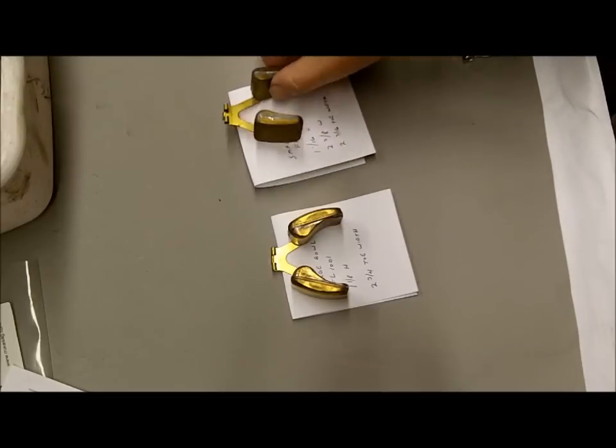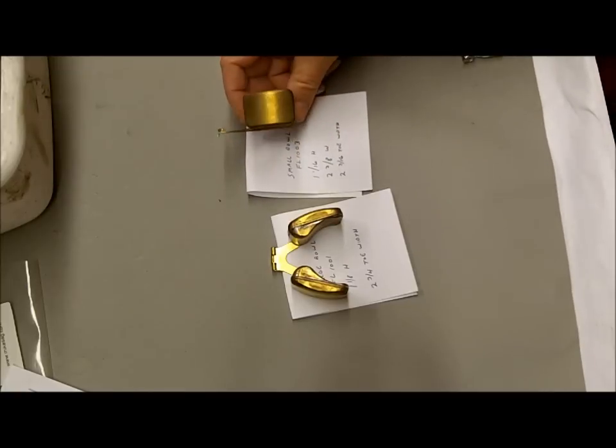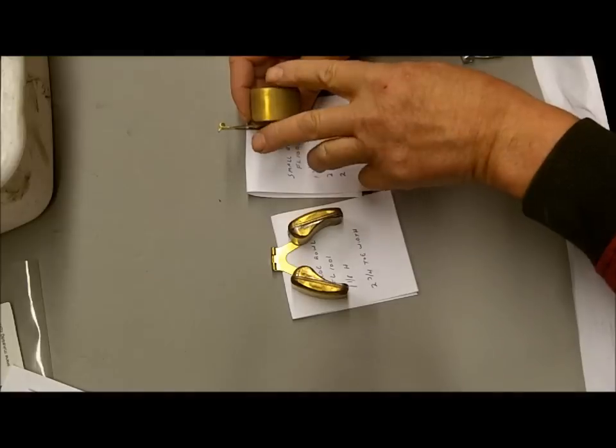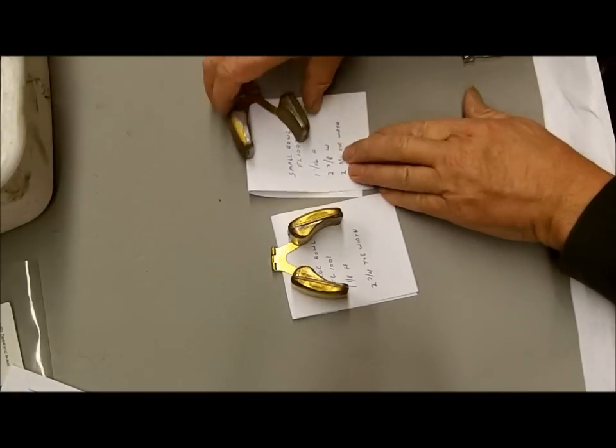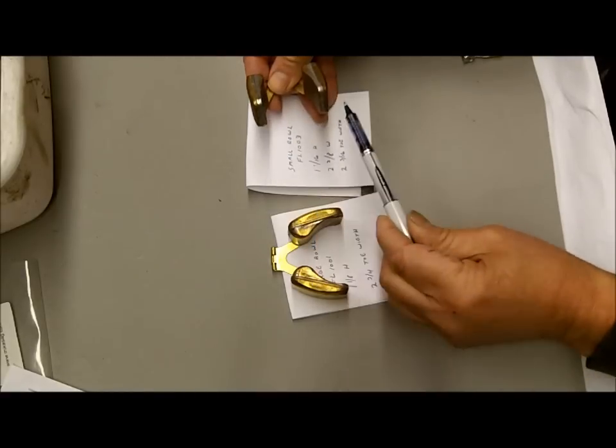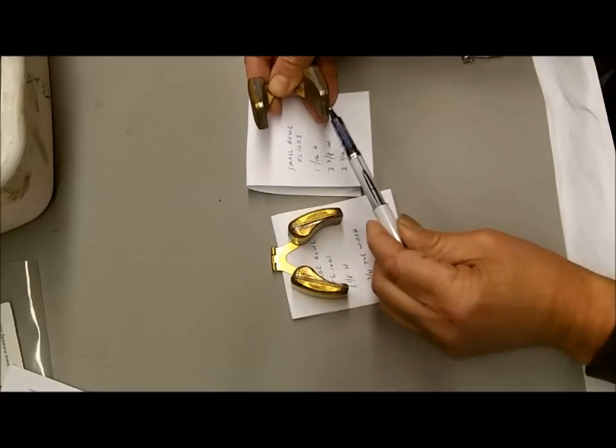This is our small bull, part number FL-1003. The height here is 1 and 1/16 of an inch overall, and the toe width, which is from here to here, is 2 and 3/16 inches.